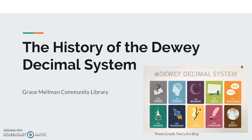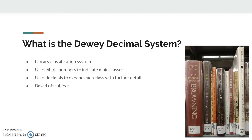The History of the Dewey Decimal System, presented by the Grace Maumann Community Library. The Dewey Decimal System is the most widely used classification system for books in the library.